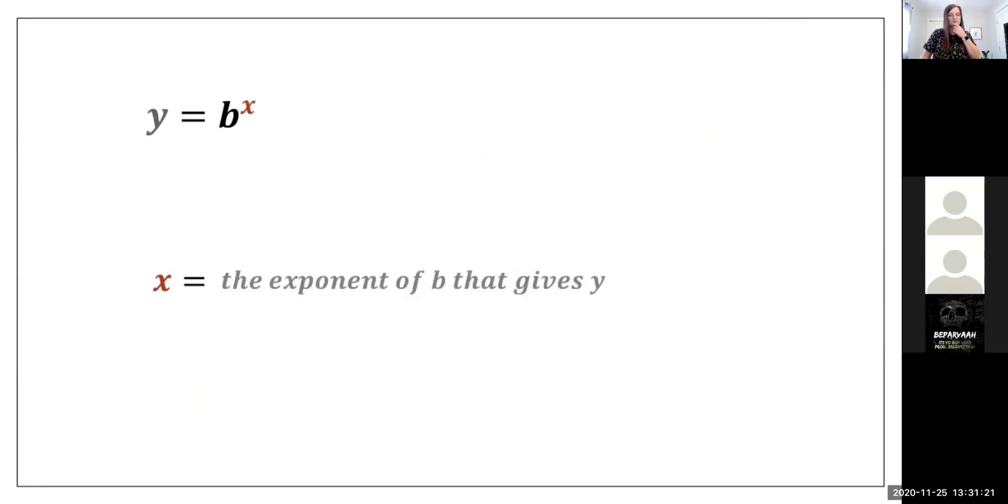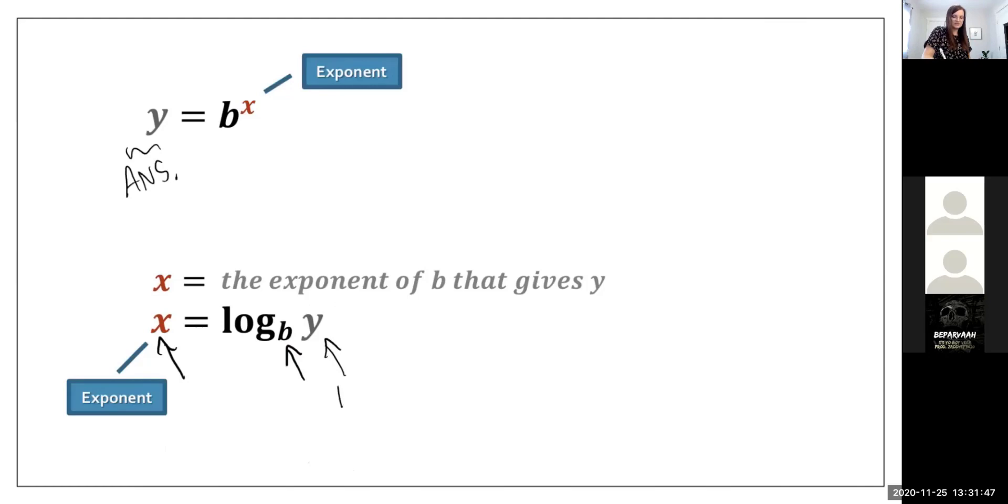So if you have y equals b to the x, which is our general function, you can kind of see this here. b to the power of x is y. So see how basically your answer from your exponential is now your input and your exponent is now here, which is written there. They basically swapped places. And that's what the definition is. x is the exponent of b that gives y is called the logarithm of y for base b. So again, b is the base. The exponent becomes the answer and the answer becomes the input of the logarithm. So they're swapping.